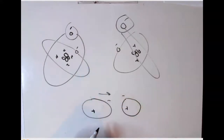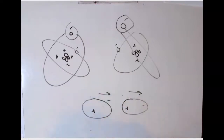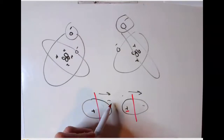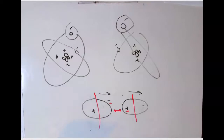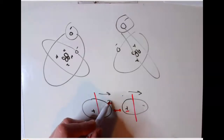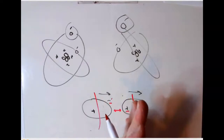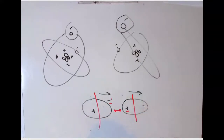One electron cloud wins the repulsion, successfully pushing back on the other. As that happens, the majority of the charge on one side of the atom becomes positive, and the majority of the charge on the other side becomes negative. This negative charge and this positive charge will favorably interact — and that's a Van der Waals interaction. It's this very subtle negative charge from the electron cloud on one side and a very subtle positive charge from the exposed nucleus on the other side.